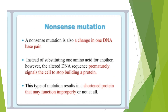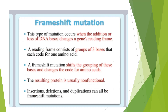The third type is nonsense mutation. In this mutation, a premature signal is given to the cell to stop the building of protein. A single base pair is changed and it produces a stop codon that stops the synthesis of the protein.